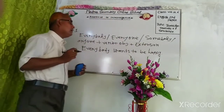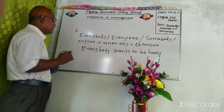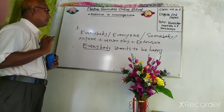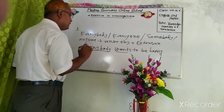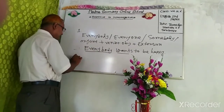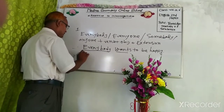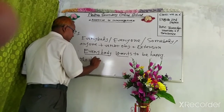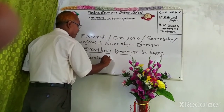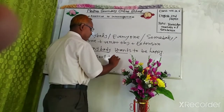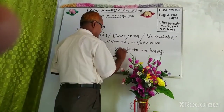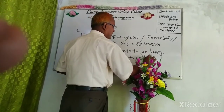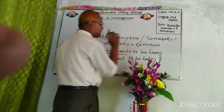So, the interrogative sentence — we can see here everybody is at the start, then the main verb 'wants'. So, the interrogative sentence will be: everybody will be omitted, then you can use 'who does not', plus main verb, 'want to be happy', plus interrogative sentence sign.